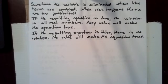Sometimes the variable is eliminated when like terms are combined. When this happens, there are two possibilities. If the resulting equation is true, the solution is all real numbers. Any value will make the equation true. If the resulting equation is false, there is no solution. No value will make the equation true.